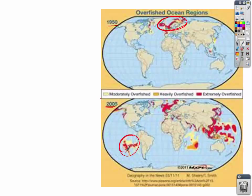Look at Southeast Asia — cultures down there are so dependent on fish, and there are so many people, that our oceans are being stressed by the growth of the human population. The extreme red areas you're looking at are the extremely overfished regions.